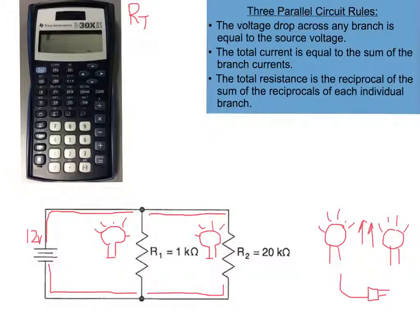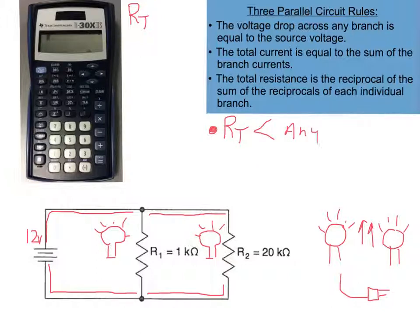The one that is often the trickiest is total resistance, and it's very different than in a series circuit. In a parallel circuit, the electrons have — in this case — two different paths to travel down. Because of that, the speed of those electrons, or current, will vary based on the individual branch resistances, which impacts the total resistance as well. Total resistance is the reciprocal of the sum of the reciprocals of each individual branch.